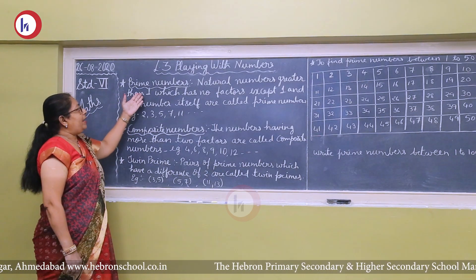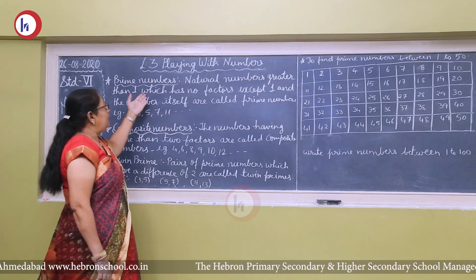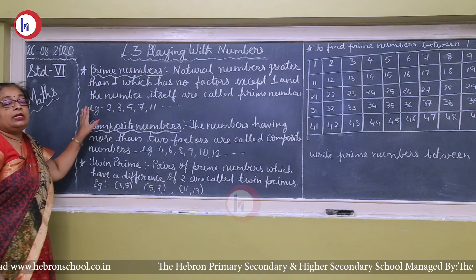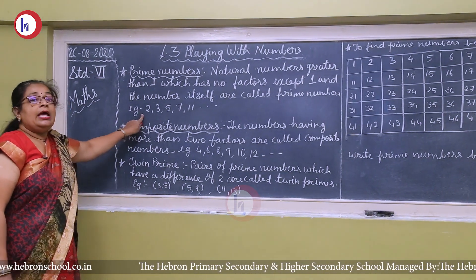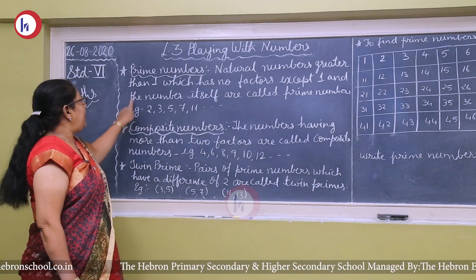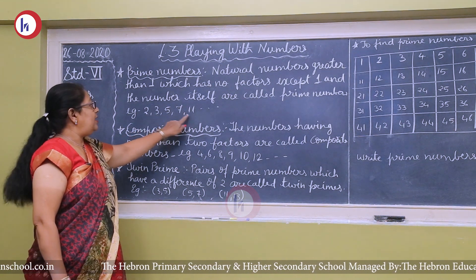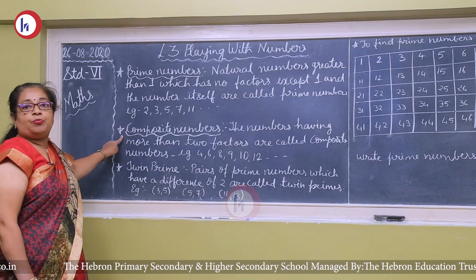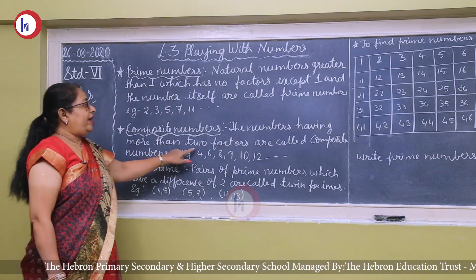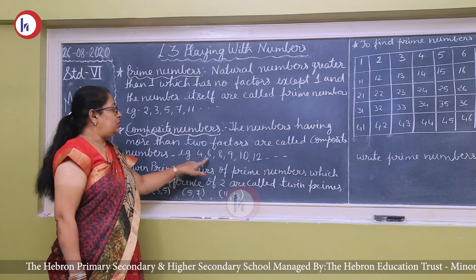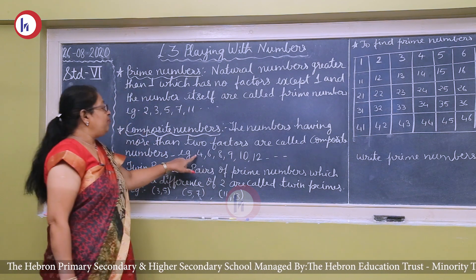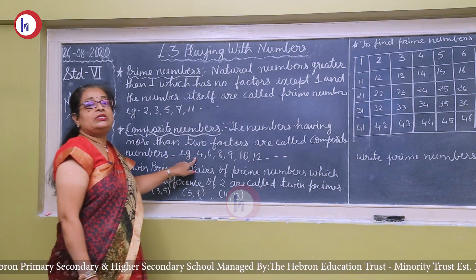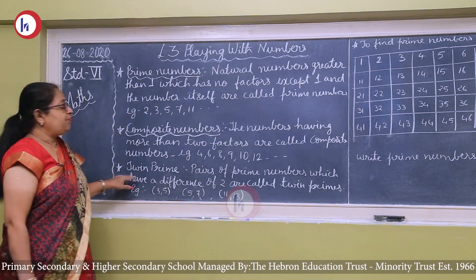Now we continue with prime numbers. Natural numbers greater than 1 which have no factors except 1 and the number itself are called prime numbers. Examples: 2, 3, 5, 7, 11 — these numbers are not divisible by any other number except 1. Next, composite numbers: numbers having more than 2 factors are called composite numbers. Examples: 4, 6, 8, 9, 10, 12, etc. For example, 4 has factors 1, 2, and 4 — more than 2 factors — so it is a composite number.